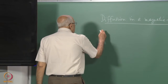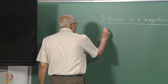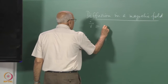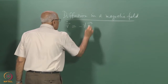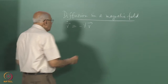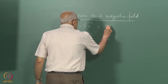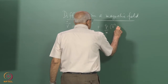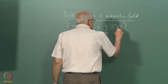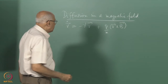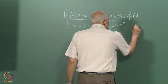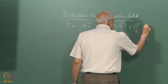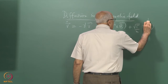Let us start by saying that the particle has a velocity V, and V-dot is equal to minus gamma times V — that is the usual friction — plus q over m times V cross B, where a constant magnetic field B is applied, and then there is the usual noise term which we write as root(gamma/m) times eta(t), and this is Gaussian white noise.